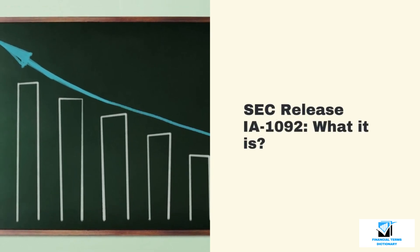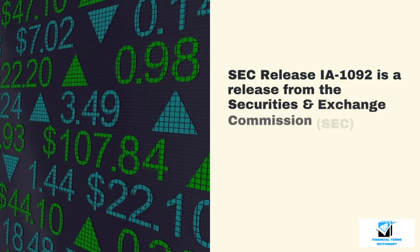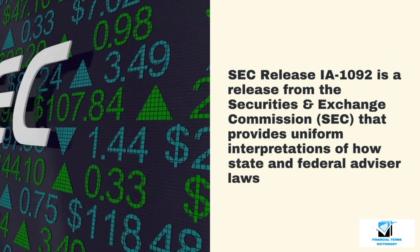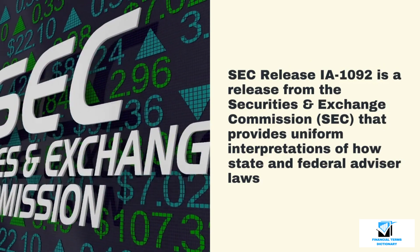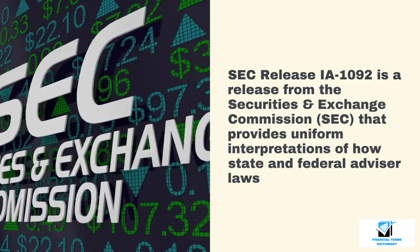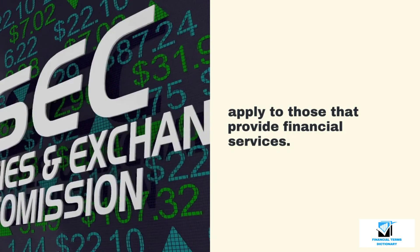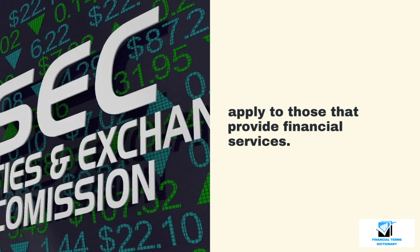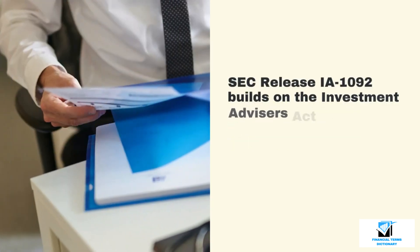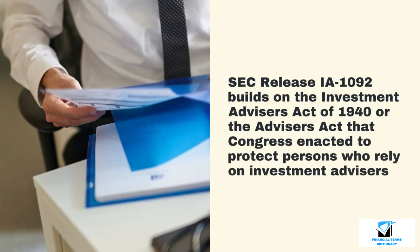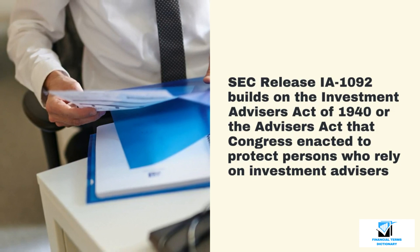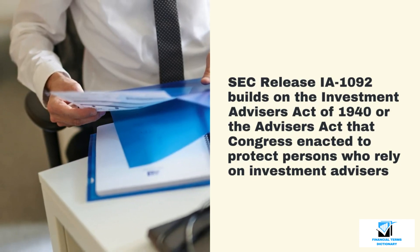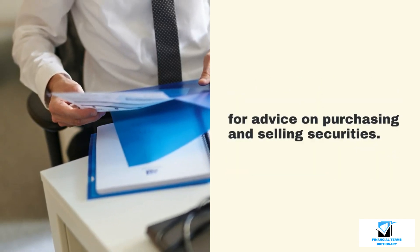SEC Release IA 1092 is a release from the Securities and Exchange Commission (SEC) that provides uniform interpretations of how state and federal advisor laws apply to those that provide financial services. SEC Release IA 1092 builds on the Investment Advisors Act of 1940, which Congress enacted to protect persons who rely on investment advisors for advice on purchasing and selling securities.